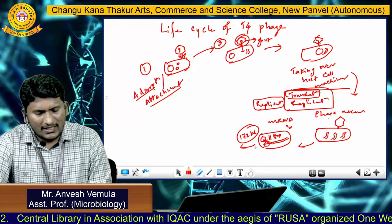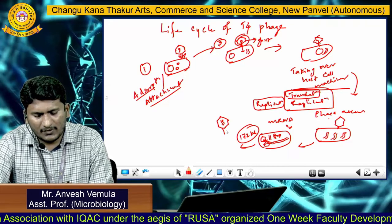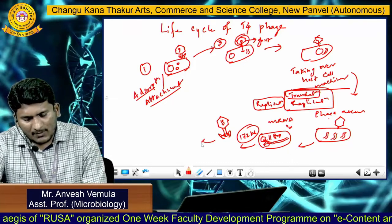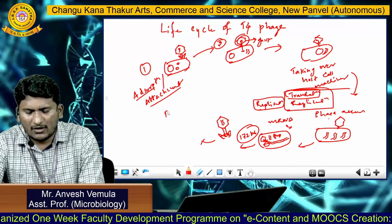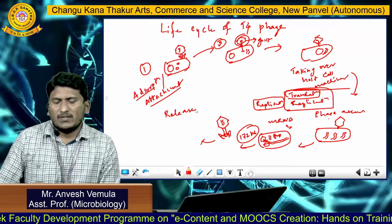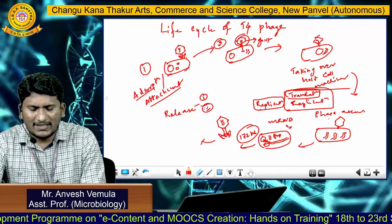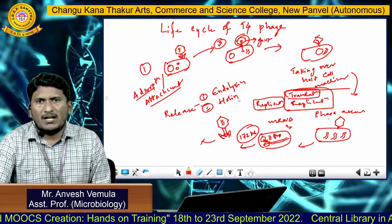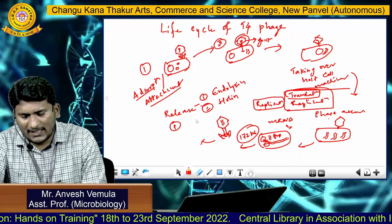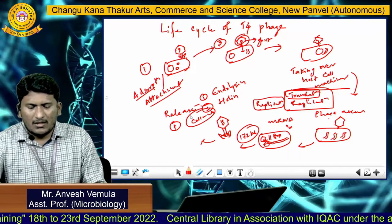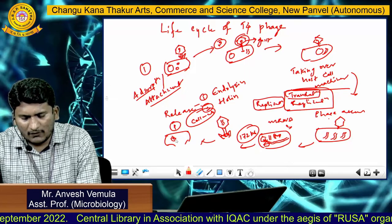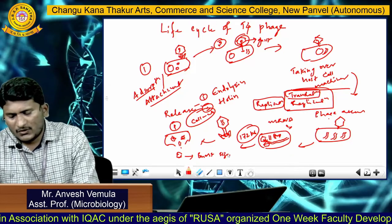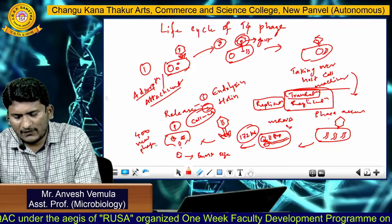Once the DNA is packaged, phage assembly takes place — assembling the sheath part, followed by the base plate and tail fibers. After completion of phage assembly, it enters the final step called release. The virus particle encodes two different enzymes through its late mRNA: endolysin and holine. These two enzymes break the plasma membrane as well as the cell wall of the bacterial host cell, releasing the pool of virus particles into the environment. This is called burst size — approximately 400 new phage particles are synthesized from the infection of one virus particle.